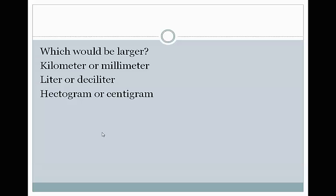Which do you think is larger? A kilometer or a millimeter? If you said kilometer, of course you'd be right. Liter or deciliter? The word deca and deci are very similar to each other, but don't get them mixed up. A deci is one-tenth of a liter, so the liter is bigger. A hectogram versus a centigram. The centigram is one-hundredth of a gram, and a hectogram is a hundred grams, so the hectogram.